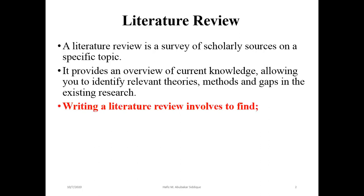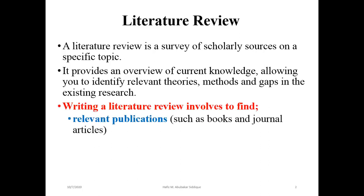Basically, what are the things that you want to write about in a literature review? You want to write about relevant publications. Number one is which subject you want to write about — relevant publications. You can write about books, journals, or articles.